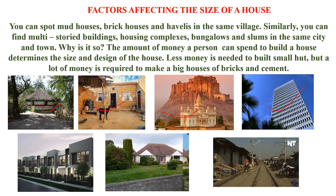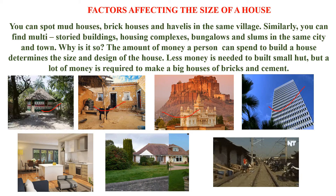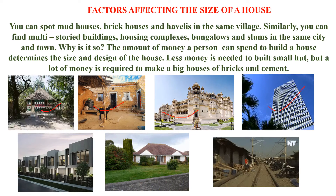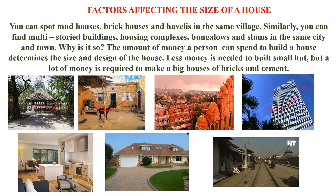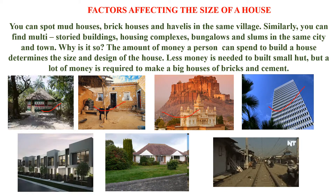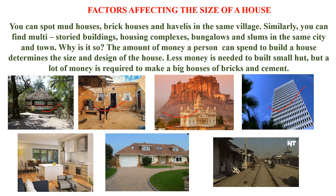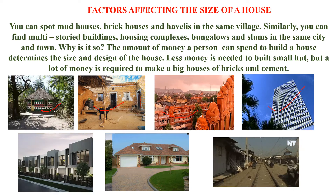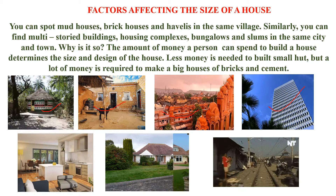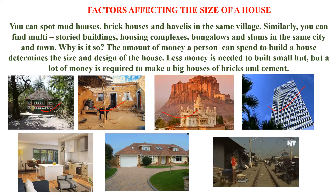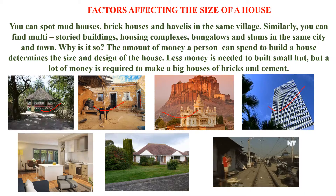In regions with danger of earthquakes, houses are prepared with wooden blocks. If constructed with bricks or cement, the earthquake collapse would damage furniture and belongings. To reduce the loss, they construct wooden houses. Even if wooden houses collapse, there will be very less damage to property. The main factor affecting the size of the house is the economic background. I hope you understood the lesson.